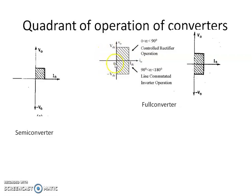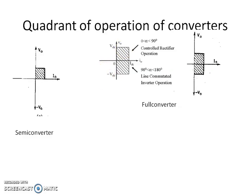The second quadrant is the forward direction of inversion operation, and the other is the reverse direction of inversion operation. In third quadrant operation, both voltage and current are negative. Therefore, output power is positive, so it is rectification operation — this is the reverse rectification operation. The first quadrant is the forward rectification operation. These are the four quadrants of operation.